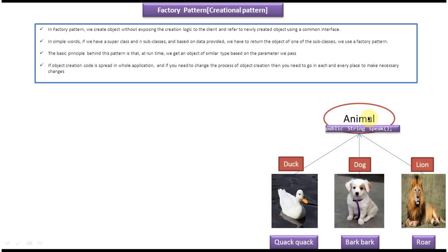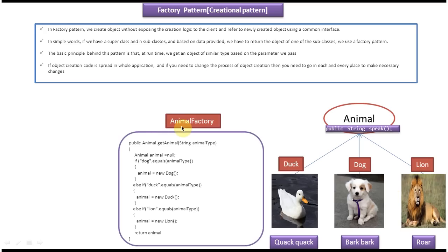So duck, dog and lion are subclasses of the animal class. And this animal has a speak method. So duck will implement this speak method and it will return quack quack. And this lion class will implement this speak method and it will return its sound. As per factory design pattern, if you want to get an object of the subclasses, then we have to write an animal factory class.